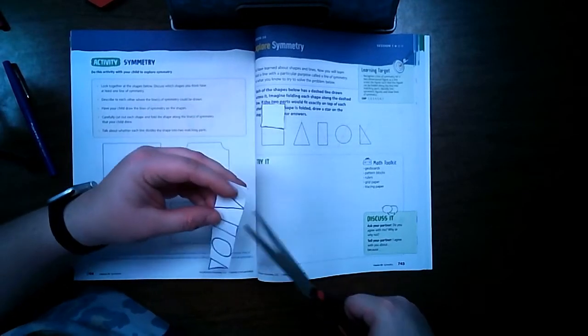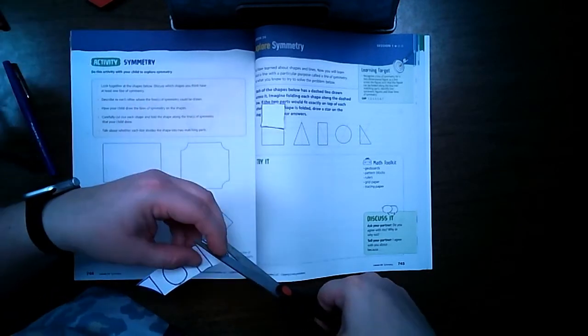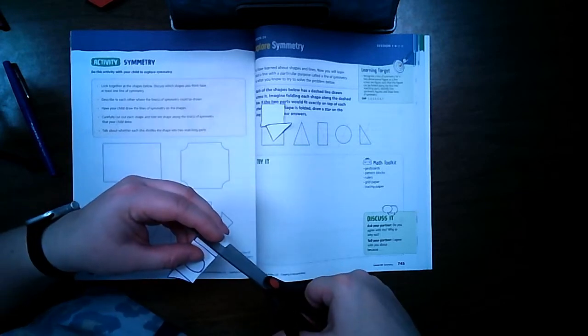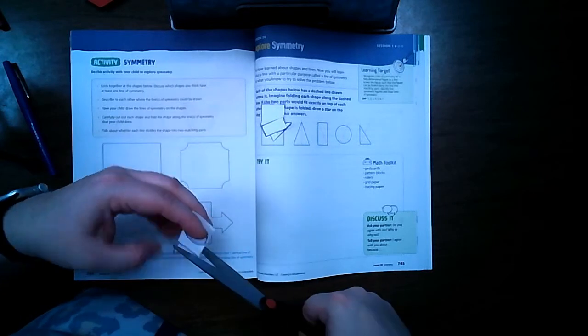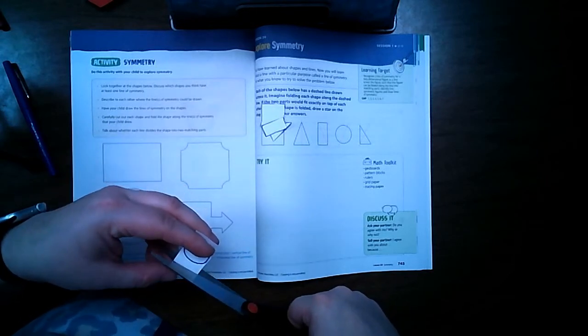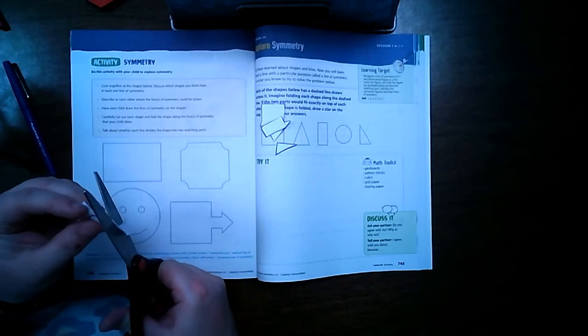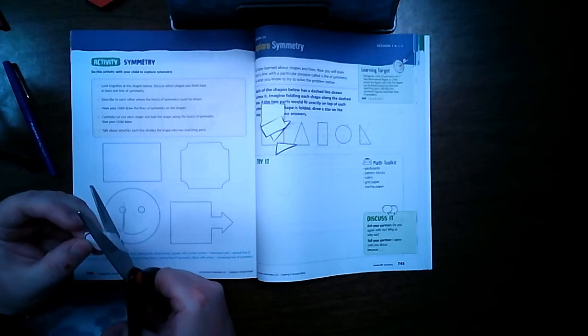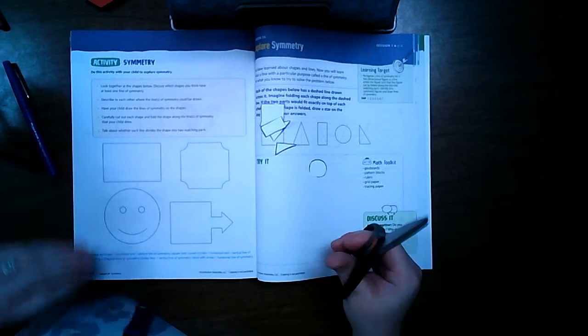So there's my square, my triangle, my rectangle, my other triangle, and then the circle is kind of a tricky one. Okay, and my circle.